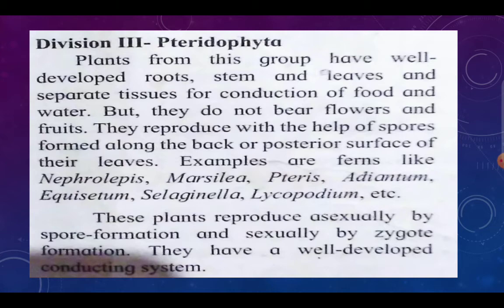Pteridophyta plants have well-developed roots, stem, and leaves, and they have separate tissues for conduction of food and water — just as we have arteries and veins for blood conduction, plants also have conducting vessels. These are called xylem and phloem, and from this division plants enter their advanced stage. However, they do not bear flowers or fruits — they are non-flowering plants that reproduce with the help of spores formed on their body.